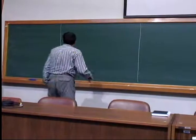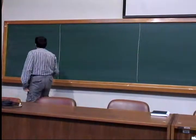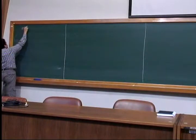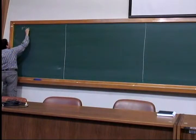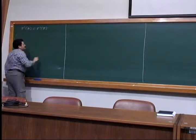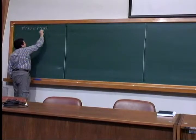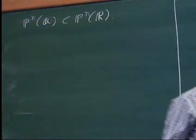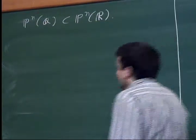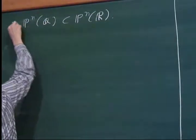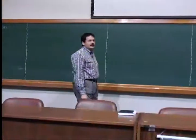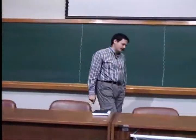Today we saw the distribution, in the sense I explained, of P^n(Q) in P^n(R). So today I would like to consider the distribution of P^n(Q), but seen in other topological spaces.